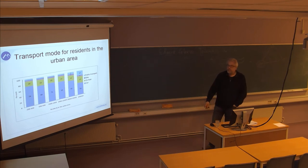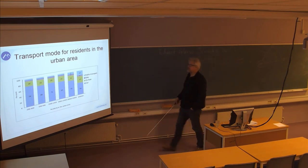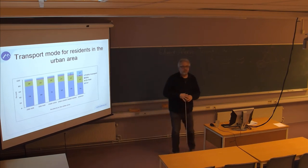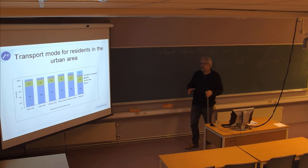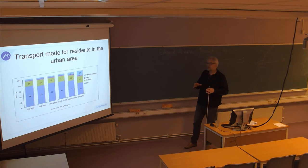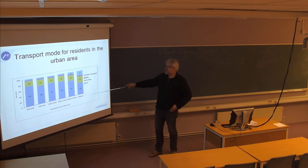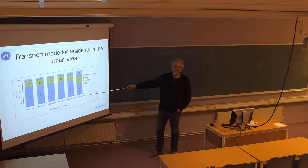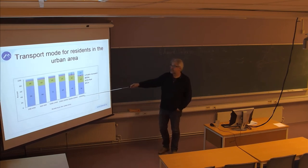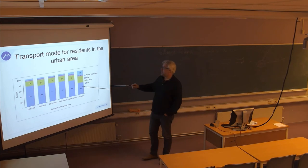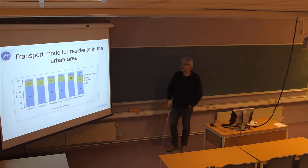Then we are back to the more generic picture. This is the number of residents in the urban area, defined as the number of inhabitants inside the community. So what we see here is, as the number of residents increases — and we need ideally to correct for density as well — but we see here, based on this Norwegian sample, that car use is diminishing with the size of the urban area.